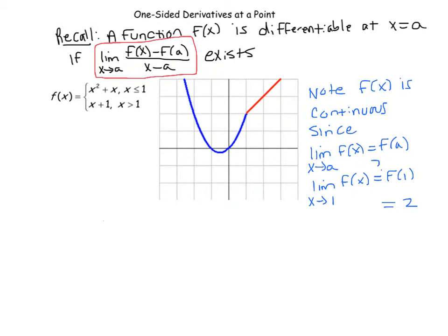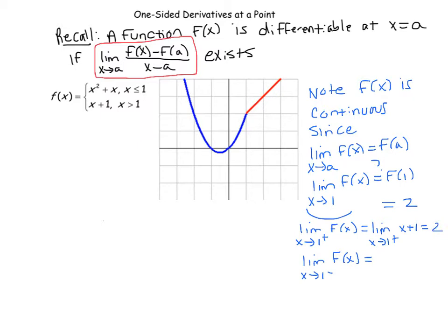We have to look at both the right-hand and left-hand limits. The limit as x goes to 1 from the right of f(x) equals the limit of x plus 1, and substituting gives 1 plus 1, which is 2. Coming from the left-hand side, we evaluate using x squared plus x, and plugging in still gives 2. Therefore the limit as x goes to 1 of f(x) equals f(1), so the function is continuous.